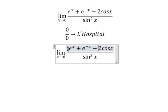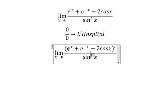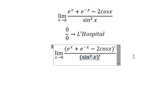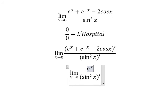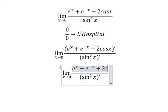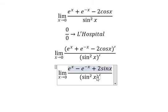So we need to do first derivative on numerator and denominator. On the numerator we get e to the power of x minus e to the power of negative x. The first derivative of negative 2cos(x) gives positive 2sin(x).